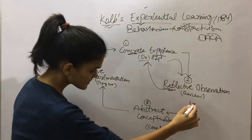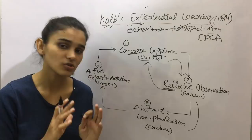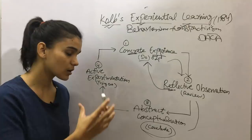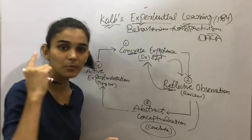The third step is Abstract Conceptualization. After you have observed and reviewed in your mind, you now make a concept of what you will do in the future. You create a conclusion — a plan in your mind — of how to do it better next time. This concept is abstract, meaning it exists as an idea in your mind.